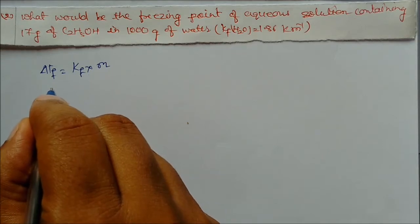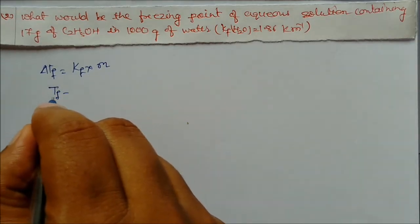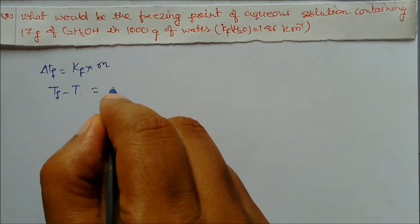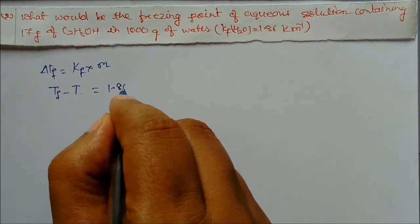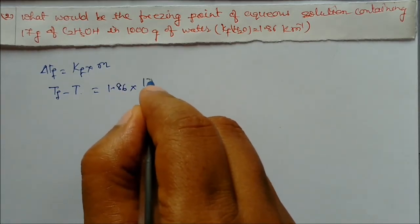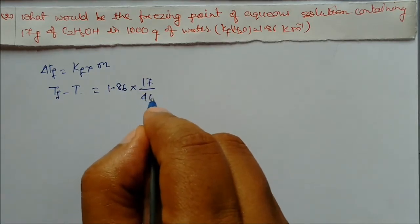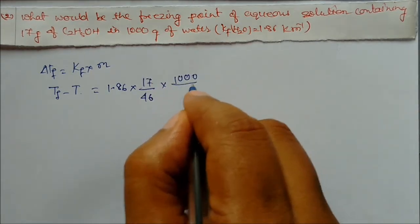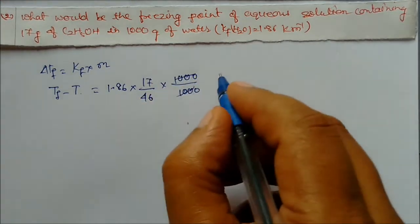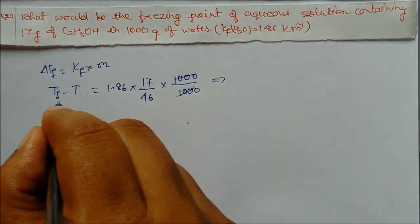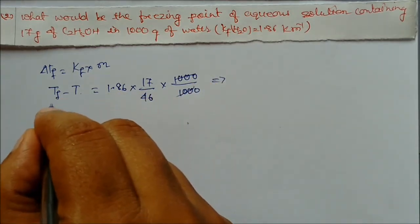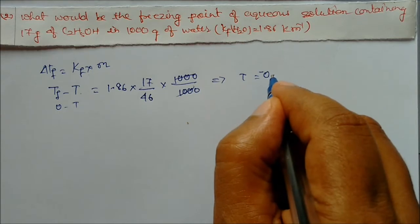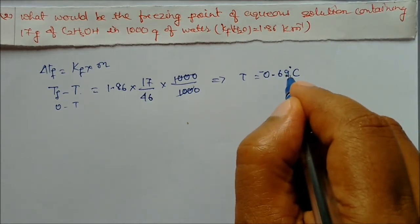Freezing point of water is 0°C, so we write 0 minus T. Kf = 1.86, the solute is 17 grams with molar mass of ethanol = 46, and water is 1000 grams. So molality = (17/46) × (1000/1000). Solving, we get T directly: the answer is minus 0.69 degree centigrade.